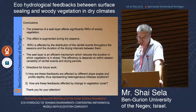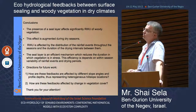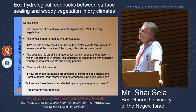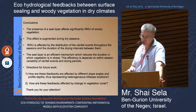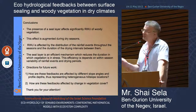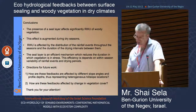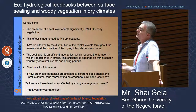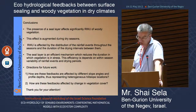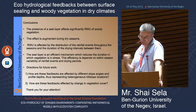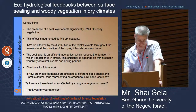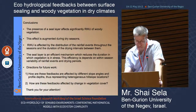I can highlight two directions for future work: how these feedbacks are affected by different slope angles and profile depths, representing different hill slope locations, and how they are affected by changes in vegetation cover — for example from grazing or erosion. These are directions we will look at in the near future. Thank you.